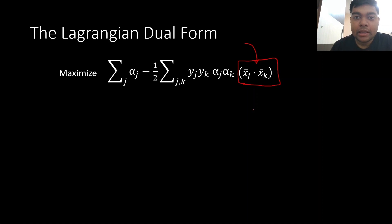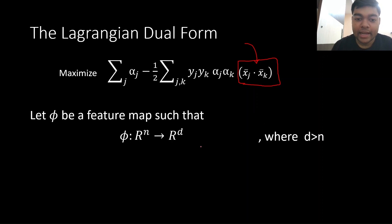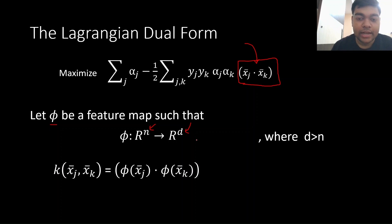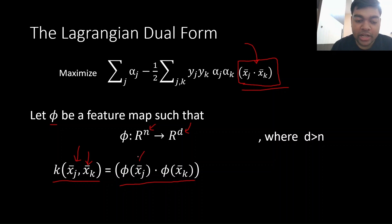This is the part that we actually need to run on a quantum computer. But remember, we are using the kernel trick inside the quantum SVM. So we need a feature map first that can project the data to a higher dimensional space. Let phi be a feature map that takes the input data of dimension n and projects it to a higher dimension d. If we rewrite, we needed this inner product, and the kernel function takes these two input data vectors and gives us the inner product of the projections of these two input data vectors.